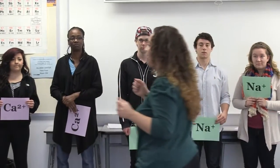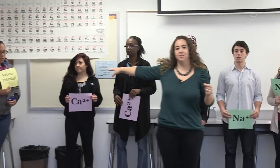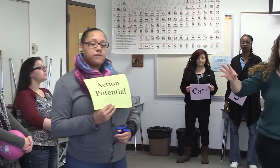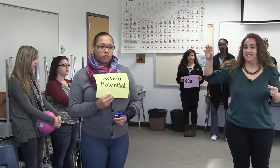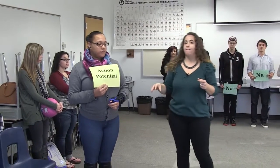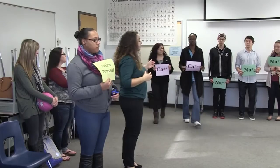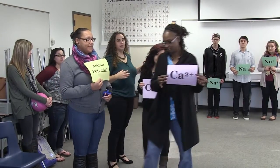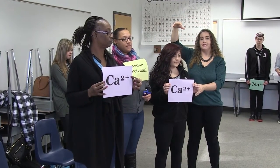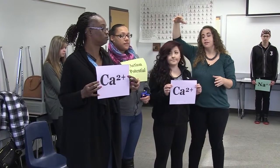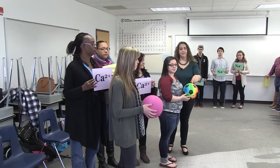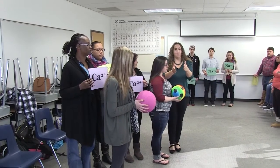Step number one: your brain starts an action potential, which travels all the way from the brain down a somatic motor neuron until it reaches the synaptic end bulb — the end of your somatic motor neuron. When the action potential arrives, it opens voltage-gated calcium channels, causing calcium to come in from the synaptic cleft into your synaptic end bulb. That calcium then stimulates the movement of vesicles containing the neurotransmitter acetylcholine toward the end of the synaptic bulb.